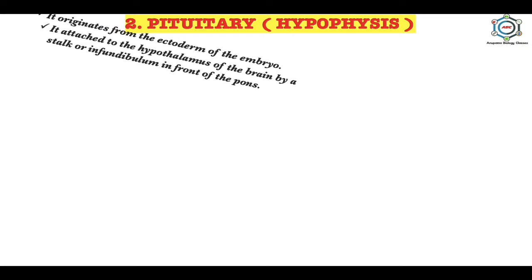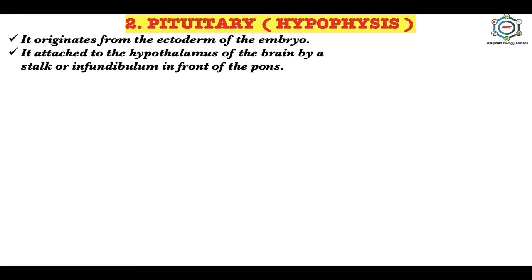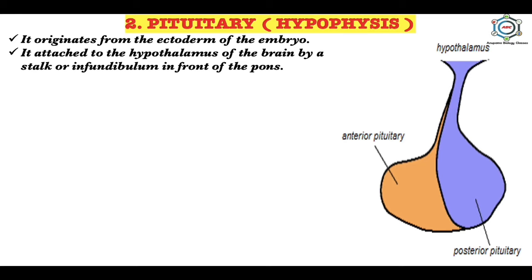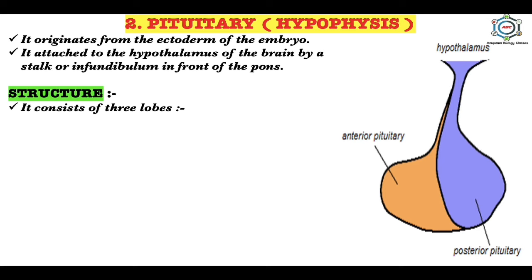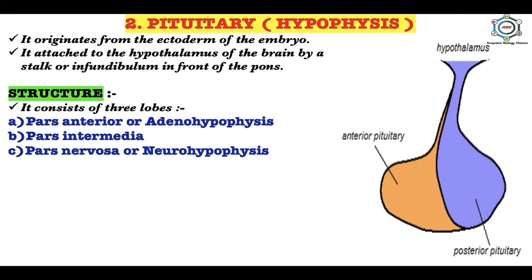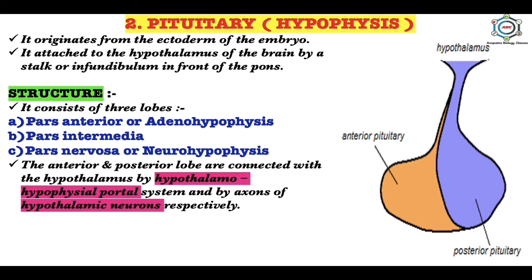The second endocrine gland is the pituitary or hypophysis. It originates from the ectoderm of the embryo and is attached to the hypothalamus of the brain by a stalk or infundibulum. According to its structure, it consists of three lobes: the pars anterior or adenohypophysis, pars intermedia, and pars nervosa or neurohypophysis.